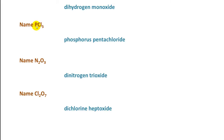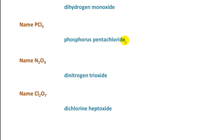Here we have a phosphorus atom and five chlorine atoms. We name the first atom as phosphorus — there's only one, and again we never use mono when naming the first atom. We have five chlorine atoms, so the prefix for five is penta. We change the ending of chlorine to -ide, so it becomes chloride. So we have phosphorus pentachloride.